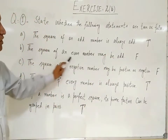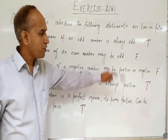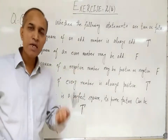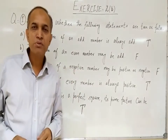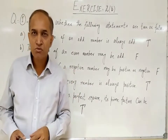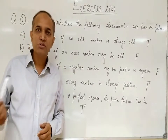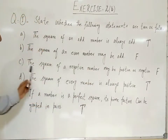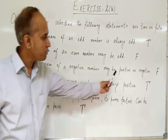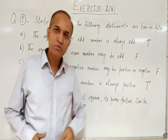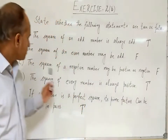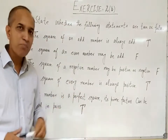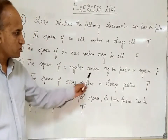In part B, the square of an even number may be odd. This is false because the square of every even number is again an even number. For example, the square of 2 is 4 and the square of 4 is 16. So this is false. In part C, the square of a negative number may be positive or negative. This is false because the square of a negative or positive number is always a positive number.